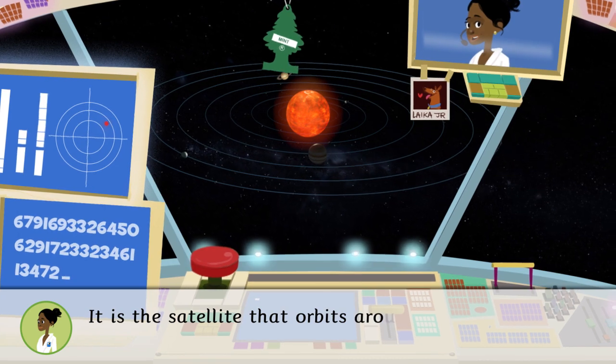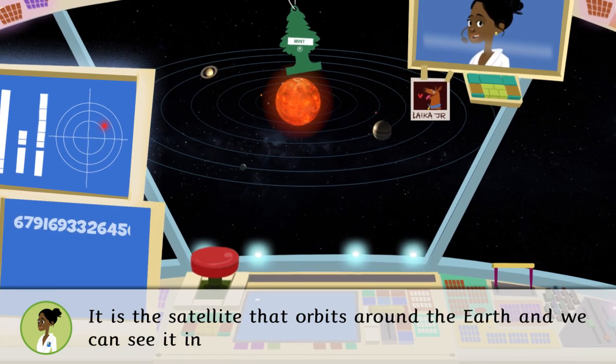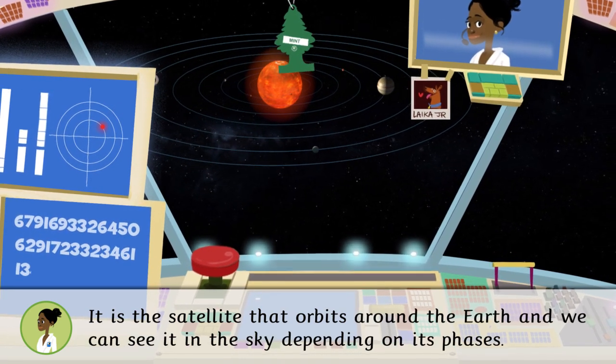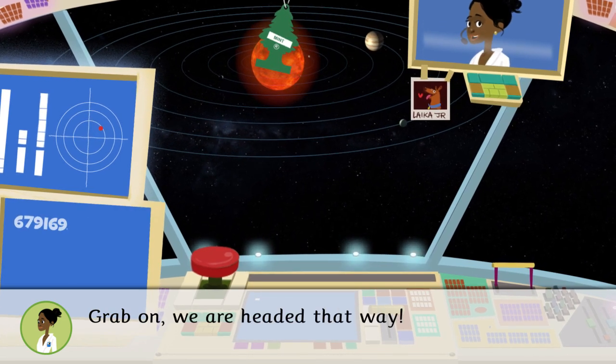It is the satellite that orbits around the Earth and we can see it in the sky depending on its phases. Grab on, we're headed that way.